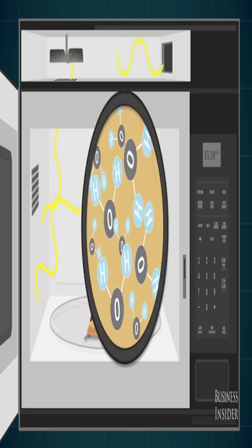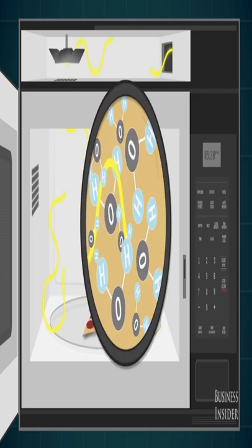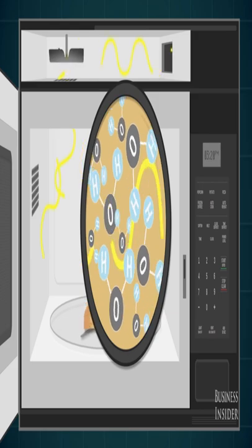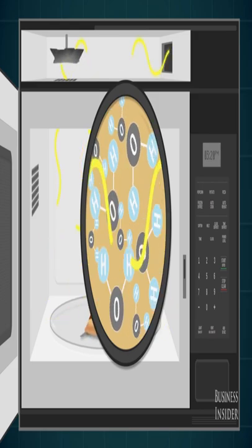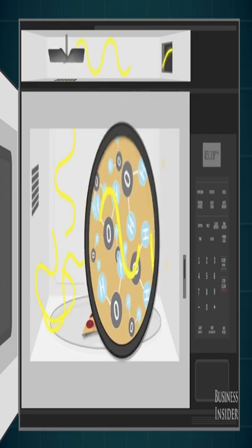The radio waves heat the water inside food by pushing the tiny pieces water is made of to make them go faster. As the pieces move faster, they get hotter, which makes the food warmer.